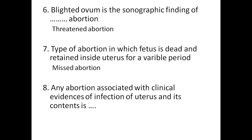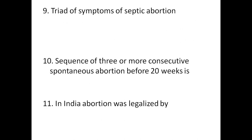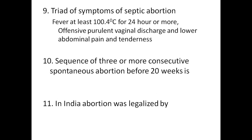Any abortion associated with clinical evidence of infection of the uterus and its contents is called septic abortion. The triad of symptoms of septic abortion includes fever of at least 100.4 degrees Celsius for 24 hours or more, offensive or purulent vaginal discharge, and lower abdominal pain and tenderness. Three or more consecutive spontaneous abortions before 20 weeks is called habitual or recurrent abortion.